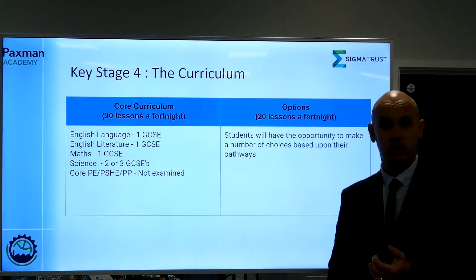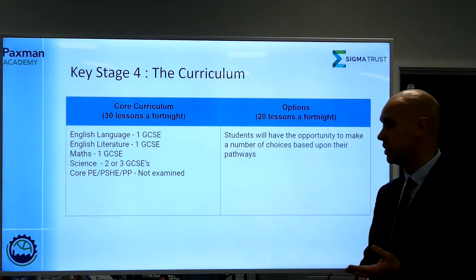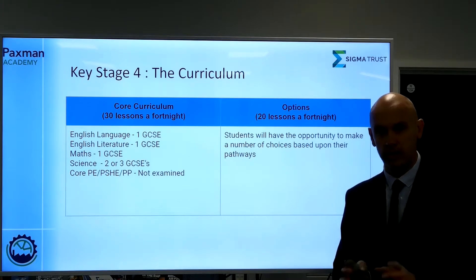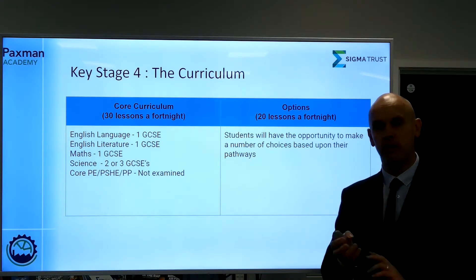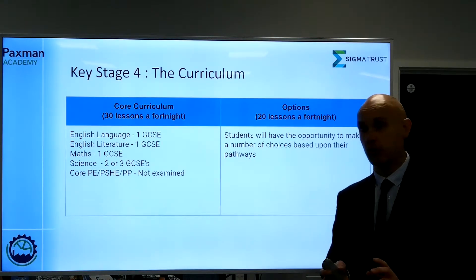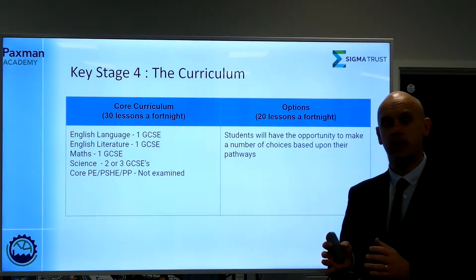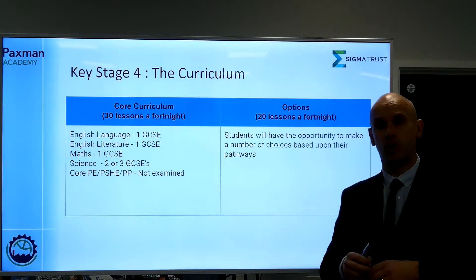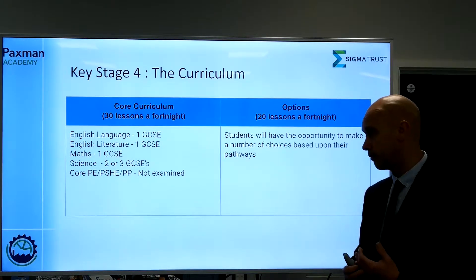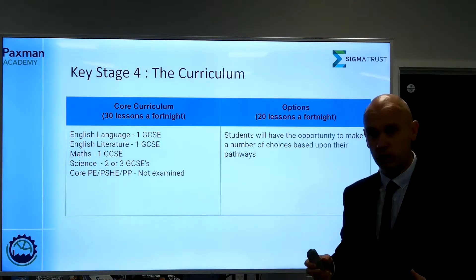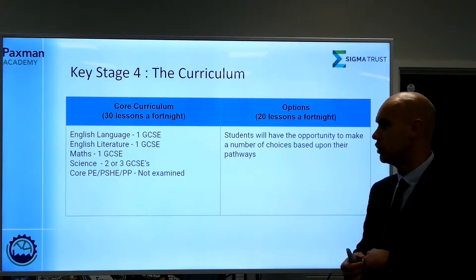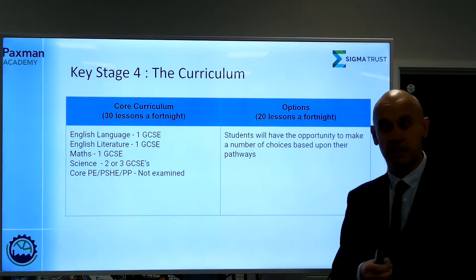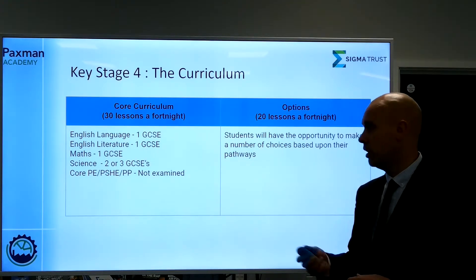The core curriculum is what all students, regardless of their options, will study. All students will study English Language — one GCSE. All students will study English Literature — another GCSE. All students will study Maths — another GCSE. All students will study Science. There are two different pathways in science: Mr Wilby will work with students and parents later in the year to discuss these options. Essentially, there's one pathway for the vast majority — two GCSEs as combined science — and then a Trilogy for individual sciences for our most able scientists. In addition, all students will study core PE whether or not they choose a PE option, and all students will continue to have PSHE, plus an additional subject meeting our statutory PSHE and RE requirements. Those bottom courses aren't examined.